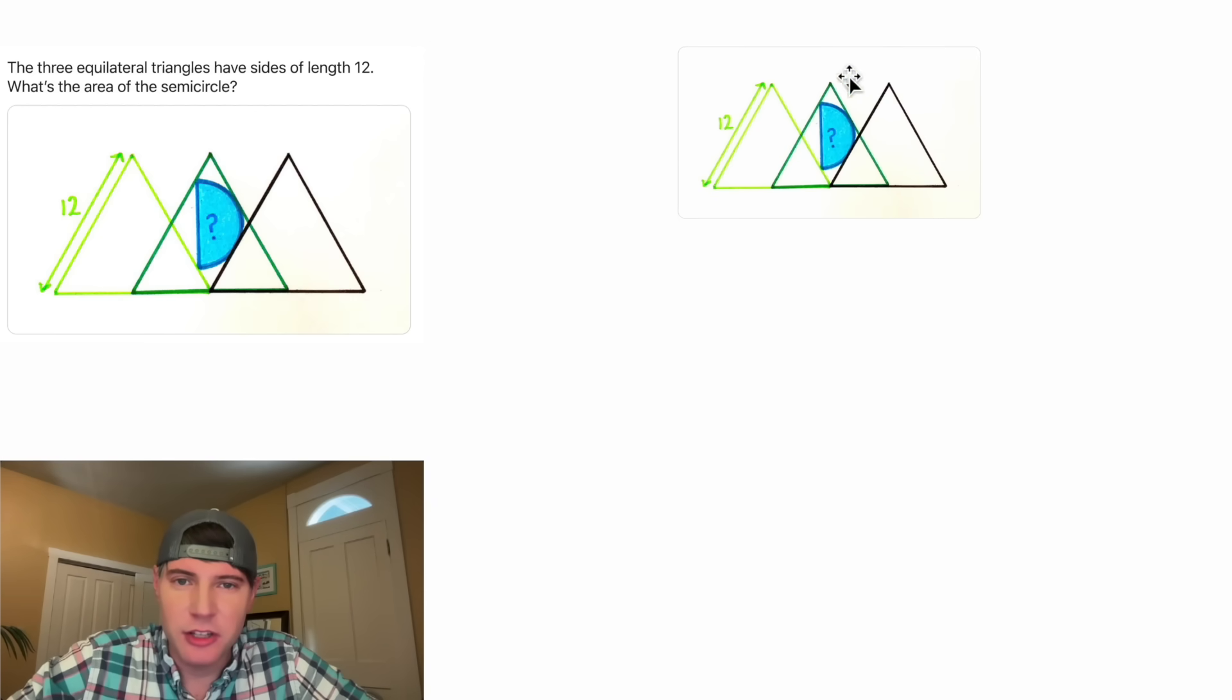Since these are all equilateral triangles, each of these sides will be equal to 12. And for this down here, it's going to be cut in half so this is 6 and 6, and this little guy will also be an equilateral triangle.